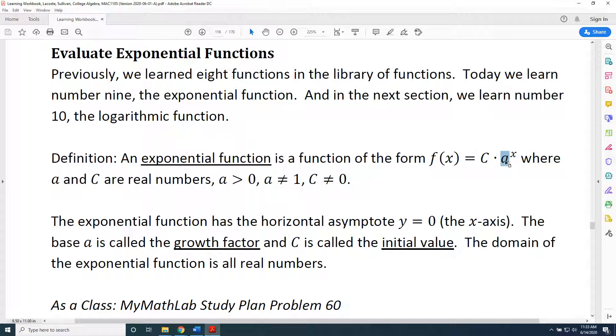So if a was one, and you raise it to some power, then you're just going to get one as the result. And then when you multiply that by C, the right-hand side of this function would just be C. So we get f(x) = C, which is, again, a constant function, not an exponential function.